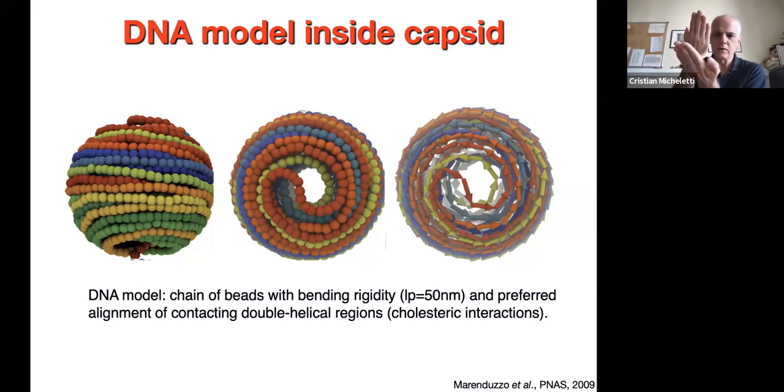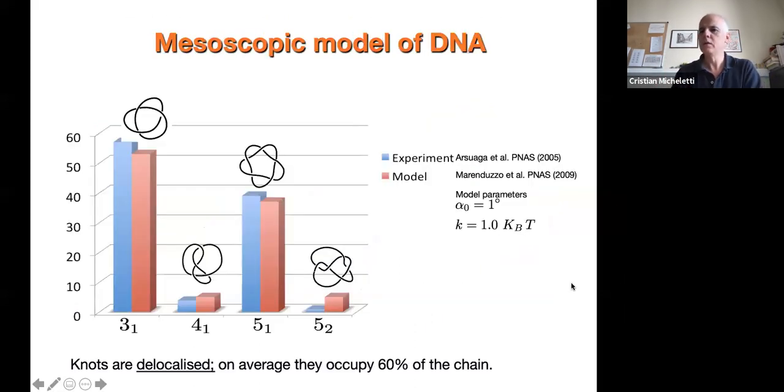Because of helical grooves and charges arranged helically along the DNA contour, the two contact strands want to be at a finite angle. If you account for this organizational principle in packaging simulations, then you can match very well the distribution of knots inside viral capsids.